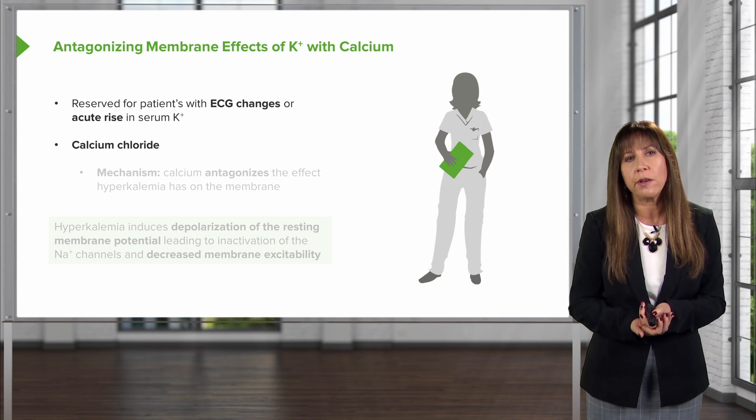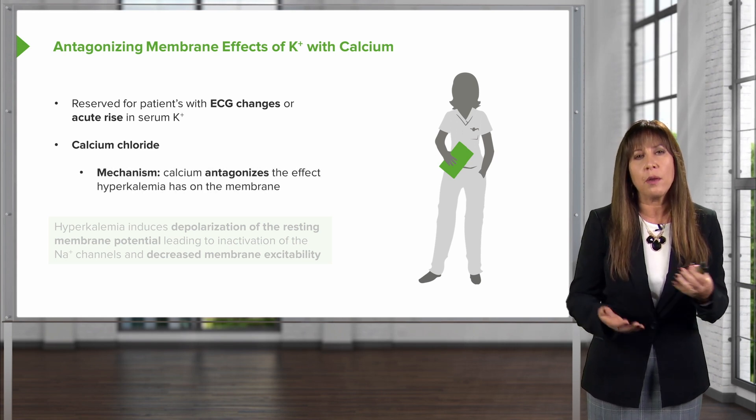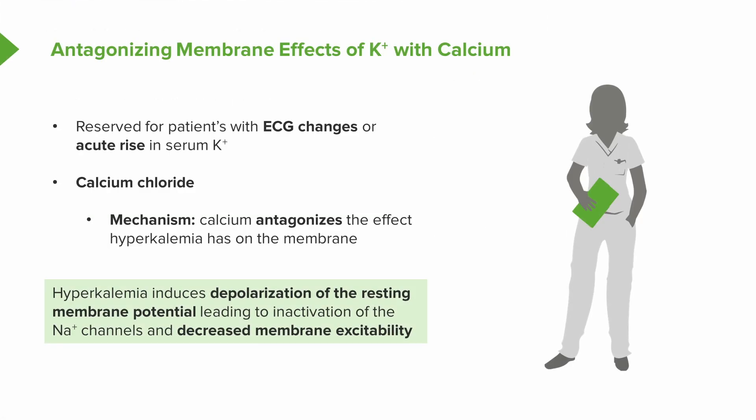We can use calcium chloride or calcium gluconate. The mechanism: hyperkalemia induces depolarization of the resting membrane potential, which leads to inactivation of the sodium channels and decreased membrane excitability. Calcium antagonizes this membrane effect. The mechanism is not well understood, but again, what I want to underscore is that this is to protect cardiac myocytes — it does nothing to remove excess potassium from the body.